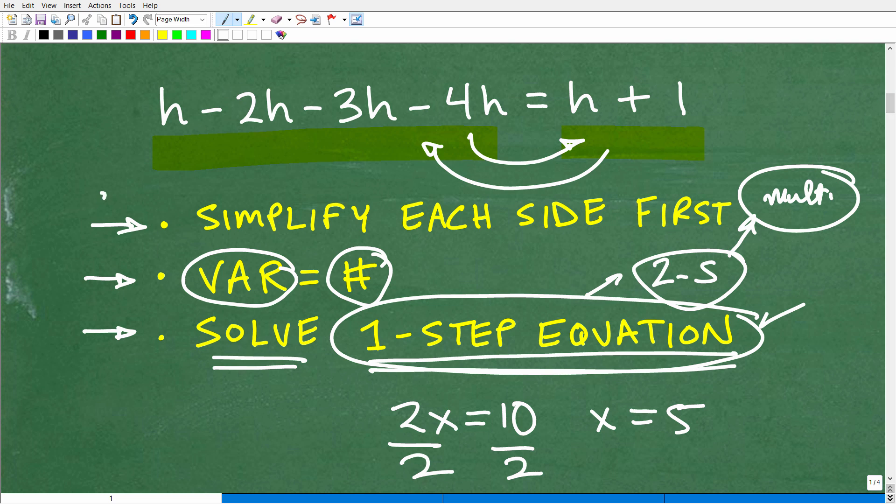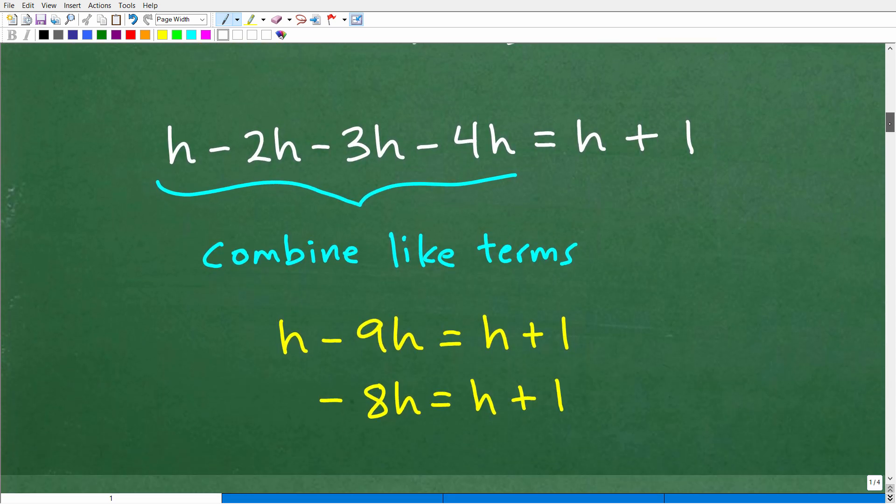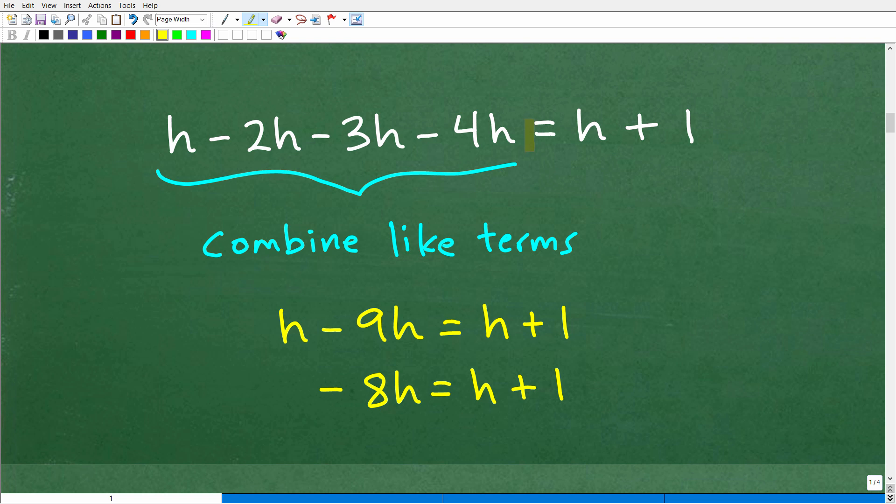All right, so this is basically the game plan that we're going to follow in order to solve this basic linear equation. Let's go ahead and start now. All right, so here is our equation. So we want to start cleaning up each side of the equation. So over here, we can combine like terms. All these are h terms that involve h's. So these are what we call like terms because they all have h's. So we can combine them, and we combine them. In other words, we just add the number in front of the variable. That's called the coefficient.